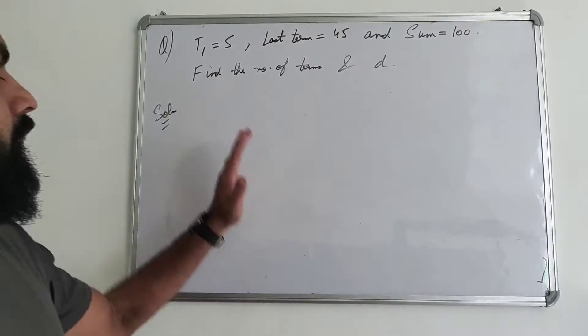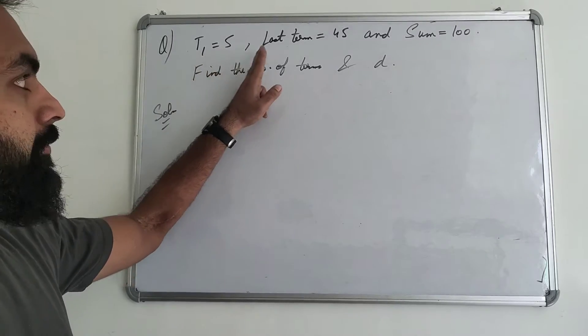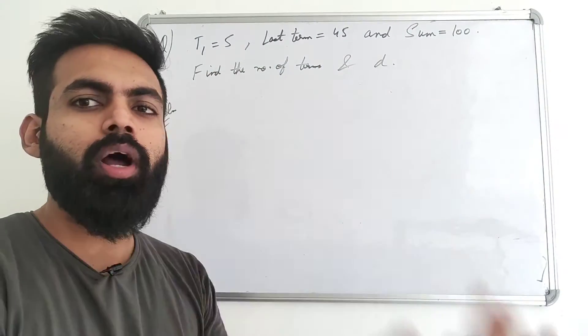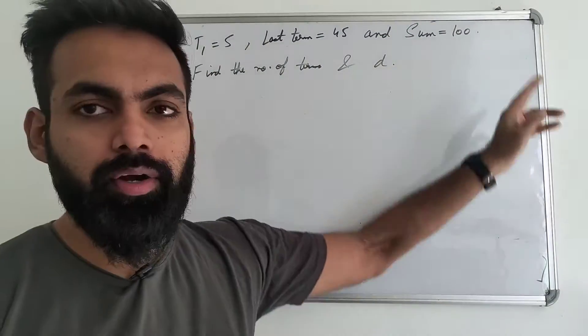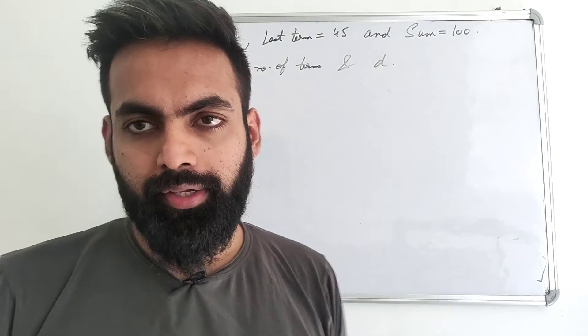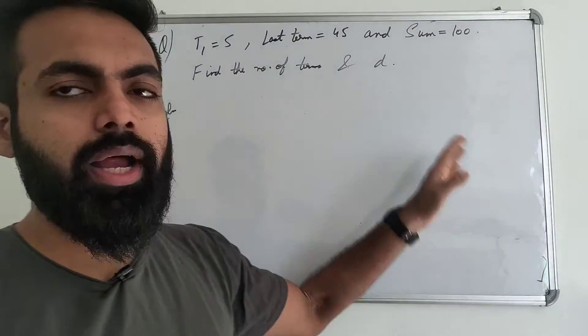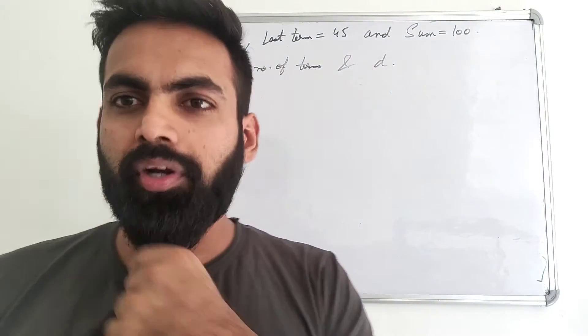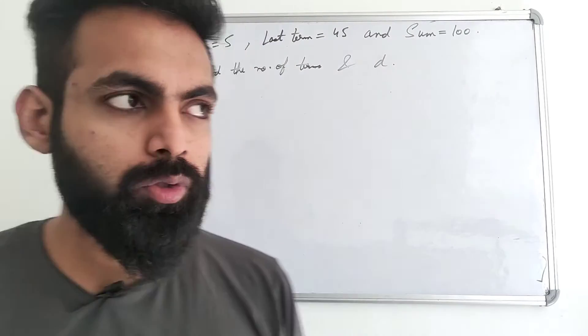Next question is, T1 given. First term is 5. Last term is 45. In any other term, the first term is given in any other term. And the sum is 100. The total sum of AP is 100. Find the number of terms and D. That is the common difference. And how many terms are there? N find the number of terms.